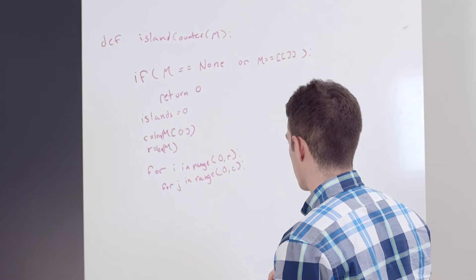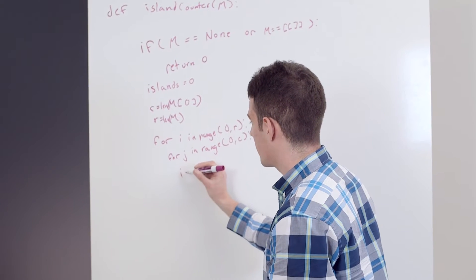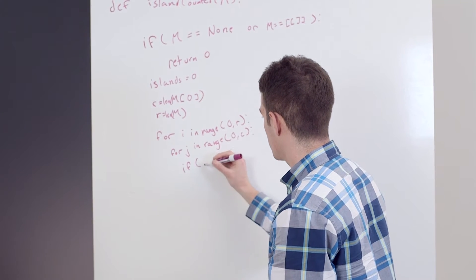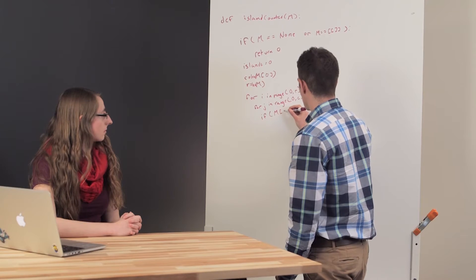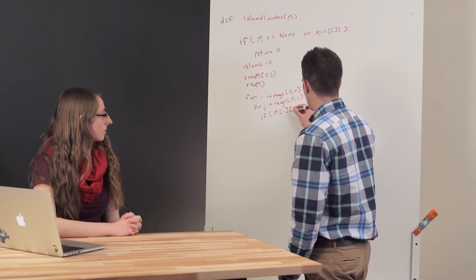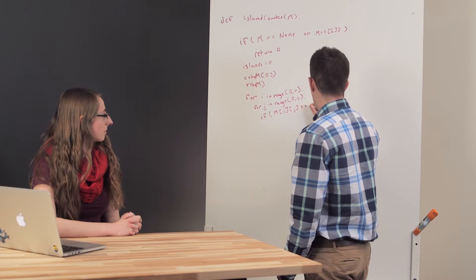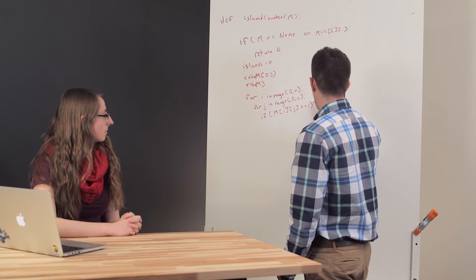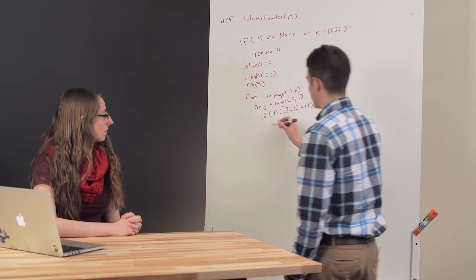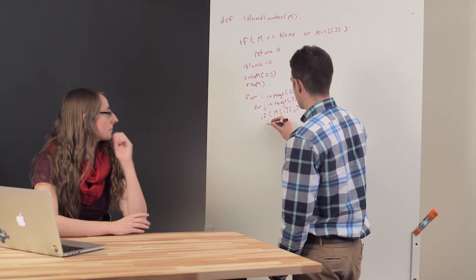Now when I get here, I want to check if the element is equal to 1. And if it is, I'm going to increment my island count.